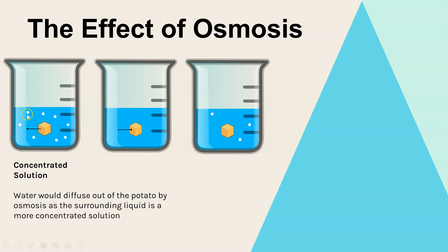Now what that means is there is a more concentrated solution outside of the potato compared to inside. And therefore, the water will diffuse out of the potato into the surrounding liquid. So the potato will decrease in mass because it's losing water.